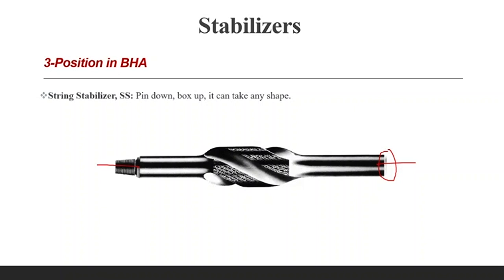We can also classify stabilizers according to their size into two types: full gauge stabilizer and under-gauge stabilizer. They are used for many reasons in controlling hole deviation, reaming, and keeping the drill collars away from the wall of the hole, thereby avoiding stuck pipe.